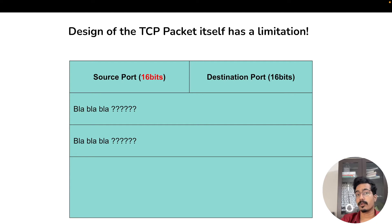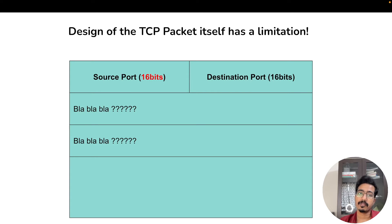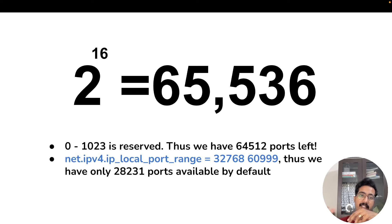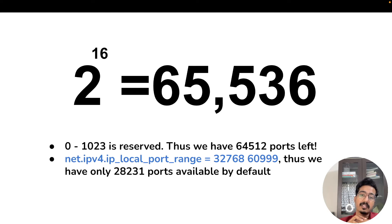According to the TCP packet layout, there are only 16 bits for the source port field. That means the maximum number of source port values is 2^16, which is around 65,000. This is the theoretical limit of how many connections a client can initiate with a single destination server. The first 1024 ports are reserved for system purposes, leaving you with around 64,000 ports.